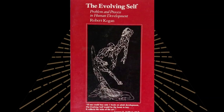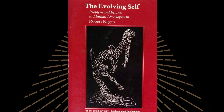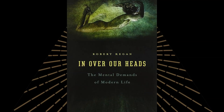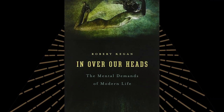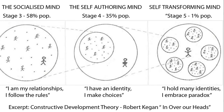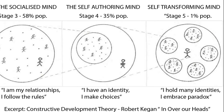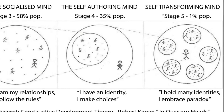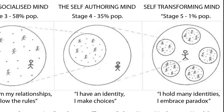Robert Keegan has been a pioneering developmental psychologist at Harvard since the 1970s, in the tradition of Jean Piaget. His major insight was to show how development went far beyond adolescence and into adulthood. His models lay out the major processes of development, from impulsive self-interest to socialized mind, self-authoring, and self-transforming mind.